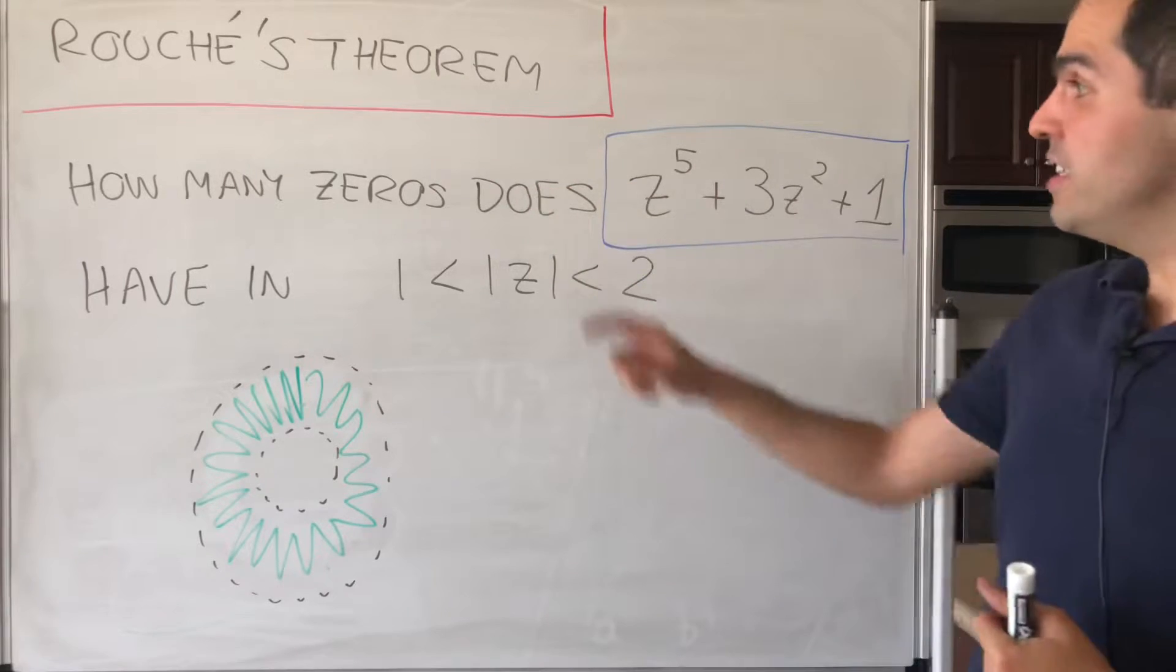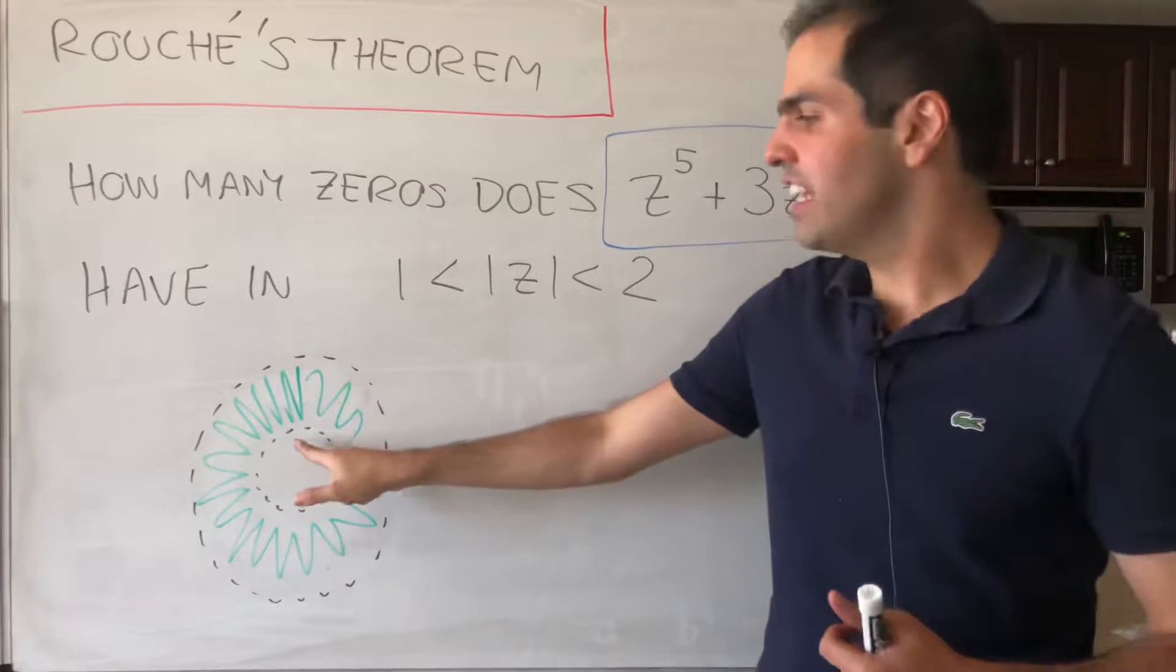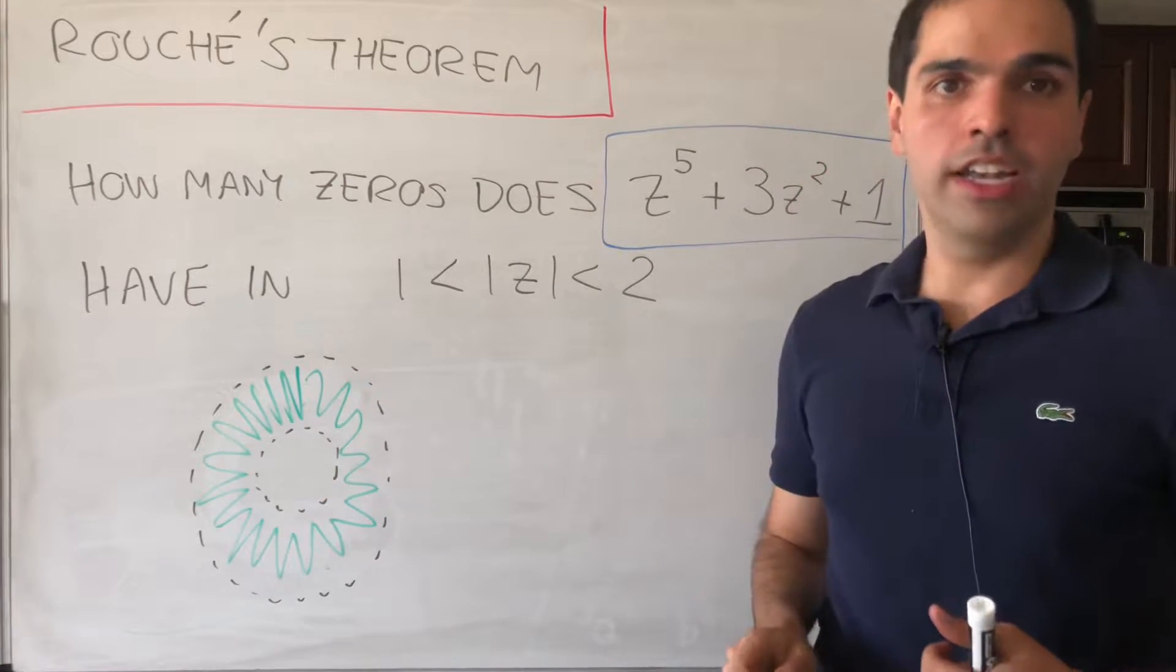All right, and the question is, how many zeros does z^5 + 3z^2 + 1 have in that annulus between 1 and 2?